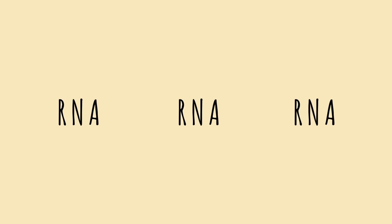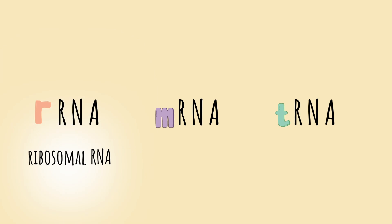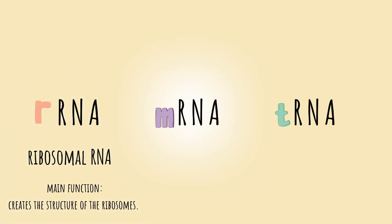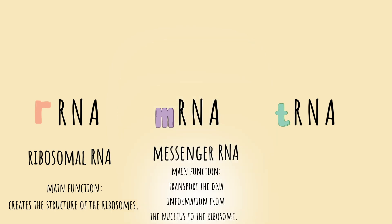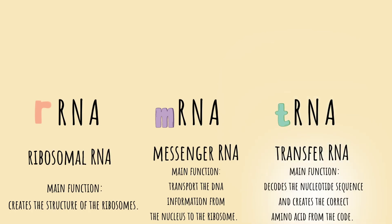You will see three different types of RNA in protein synthesis. rRNA is ribosomal RNA, and its main function is to create the structure of the ribosome. mRNA is the messenger RNA, and its main job is to transport the DNA information or message from inside the nucleus to the ribosome. tRNA is the transfer RNA, and its main function is to decode the nucleotide sequence and create the appropriate amino acid for the code — basically, it makes amino acids using the codes on mRNA.